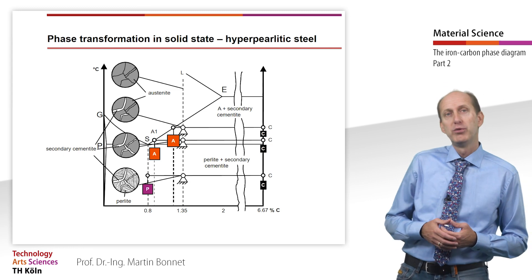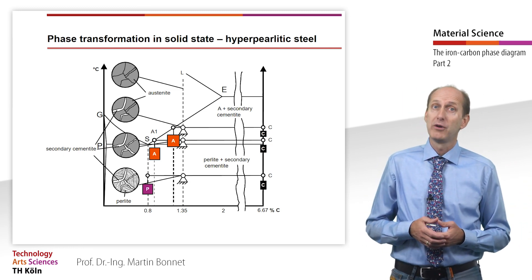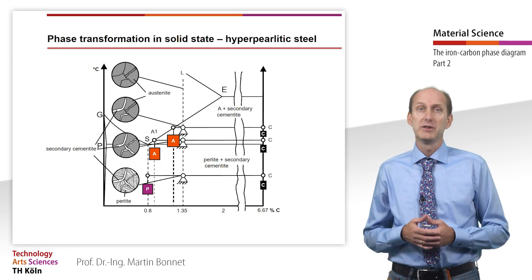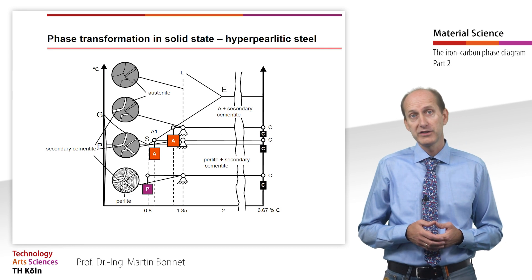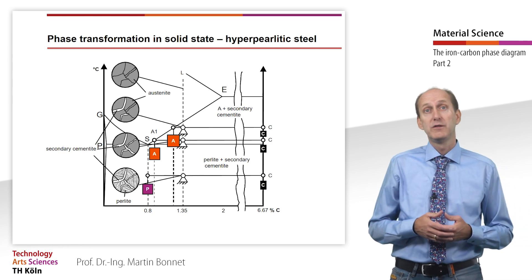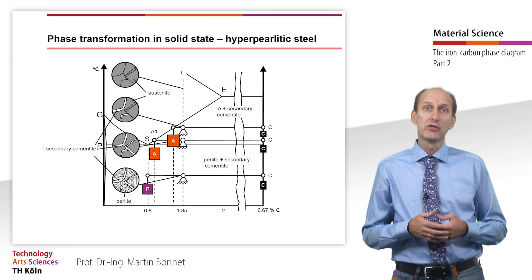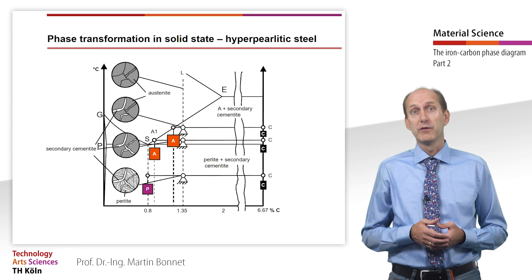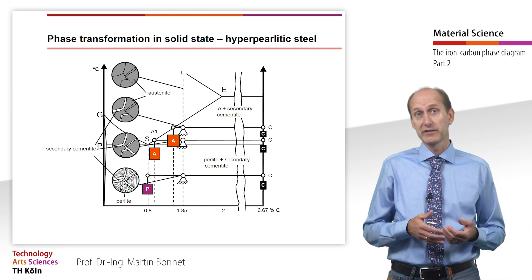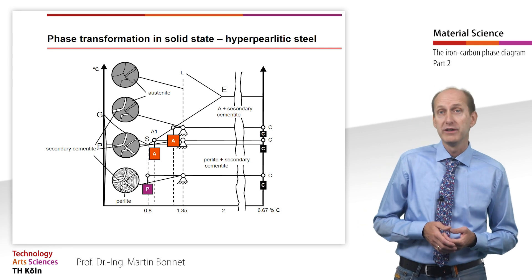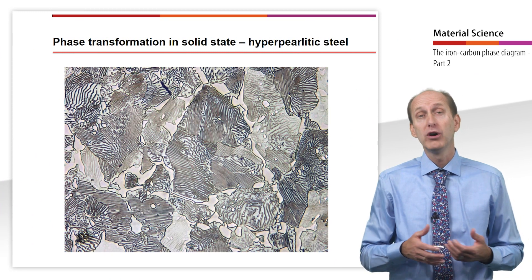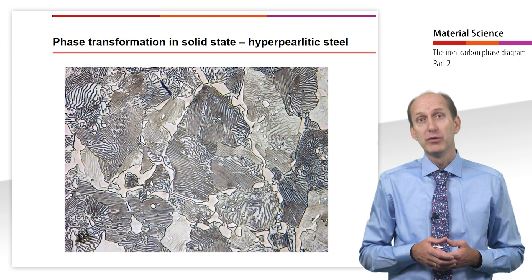Steels with a carbon content above 0.8% are called hypereutectoid steels. Carbon solubility in these steels decreases with decreasing temperature, as indicated by line ES, which is known as the solubility or saturation line. As a result, the carbon atoms must diffuse from the gamma solid solution. They move to the grain boundaries where they form cementite crystals in the form of secondary cementite. At the line PSK, the steel first consists of a gamma solid solution with a carbon content of 0.8% and a network of secondary cementite. Then the austenite transforms into pearlite, as is also the case in hypereutectoid steels.